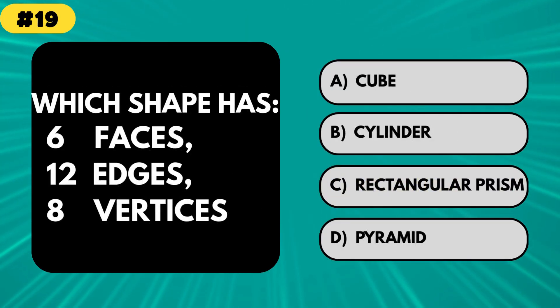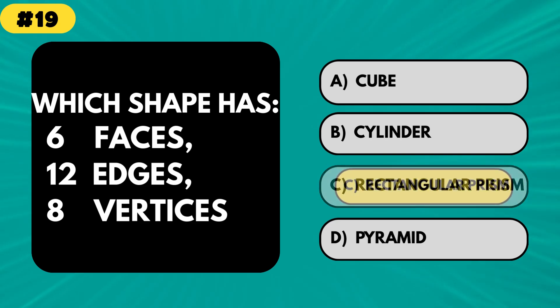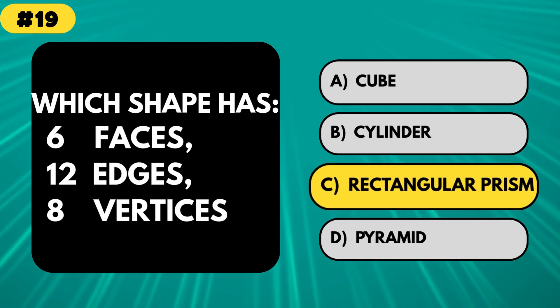Which shape has 6 faces, 12 edges, and 8 vertices? That's right, a rectangular prism. Basically a fancy box, like your cereal.